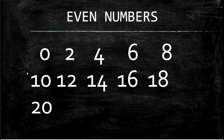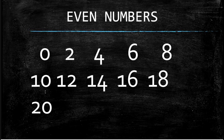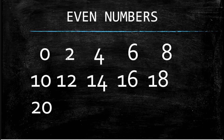The even numbers are 0, 2, 4, 6, 8, 10, 12, 14, 16, 18, 20. So you can see they end with a 0, they end with a 2, they end with a 4, 6, or 8. So even numbers end in 0, 2, 4, 6, or 8.